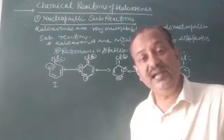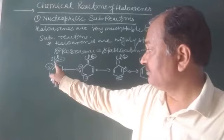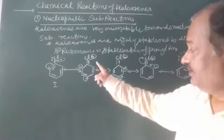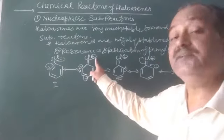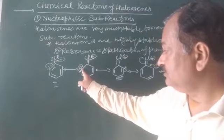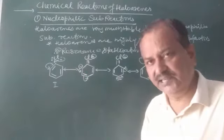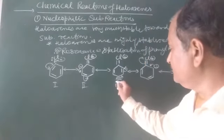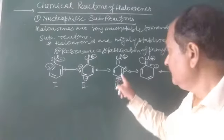In the first resonance structure, the six pi electrons are delocalized in the ring. To draw the next resonance structure, one electron pair shifts from between the carbon and chlorine. As a result, a double bond forms between the ring carbon and chlorine, creating a positive charge on the ring carbon. This electron pair then shifts further around the ring.